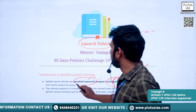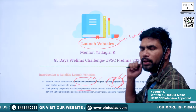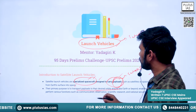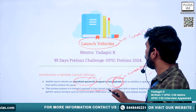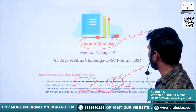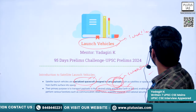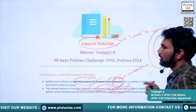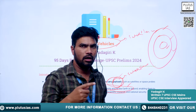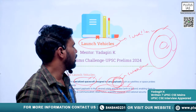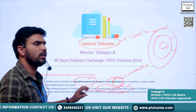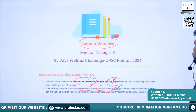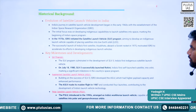The primary purpose of launch vehicles is to transport payloads — meaning satellites — to their desired orbits around the earth or beyond. The responsibility of the launch vehicle is to place these satellites into the correct orbit or trajectory.